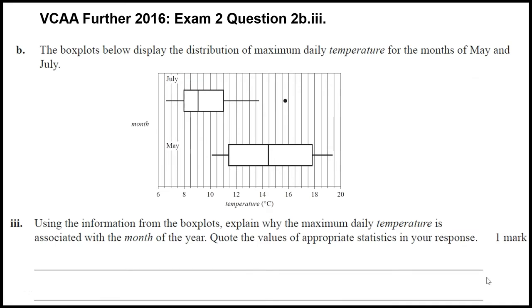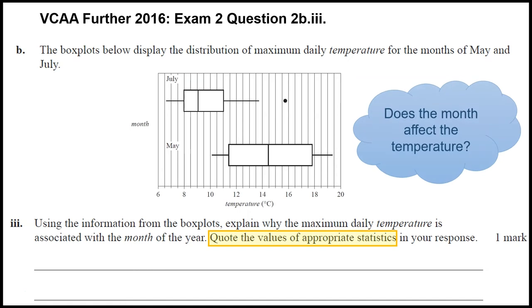This question from exam 2 is part of an extended response question about parallel box plots. It's an explanation question. We have to explain why the maximum daily temperature is associated with the month of the year, and we also have to quote the values of appropriate statistics. If we're looking at a pair of parallel box plots and asking is the temperature associated with the month, we need to ask ourselves: looking at this data, does the month affect the temperature?